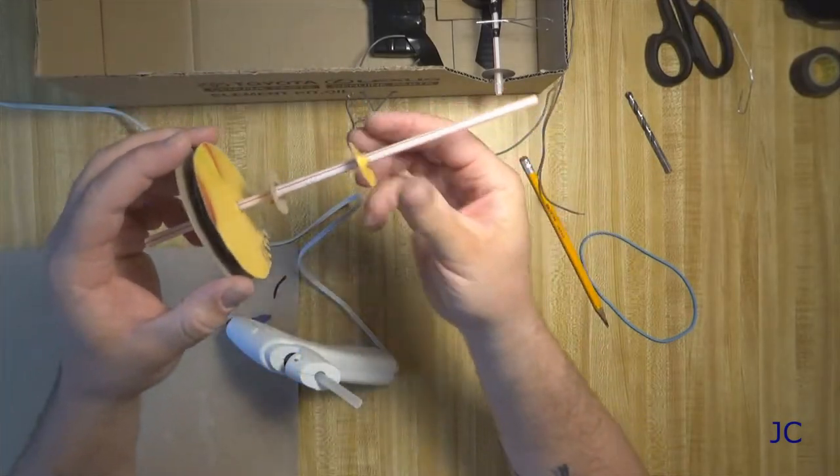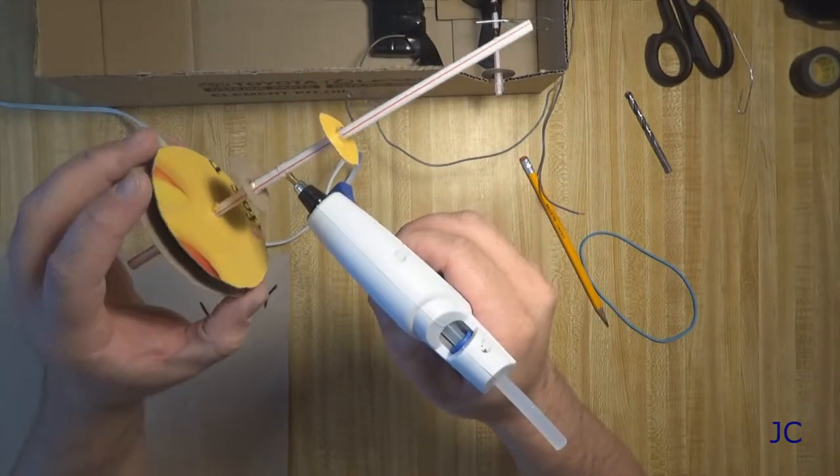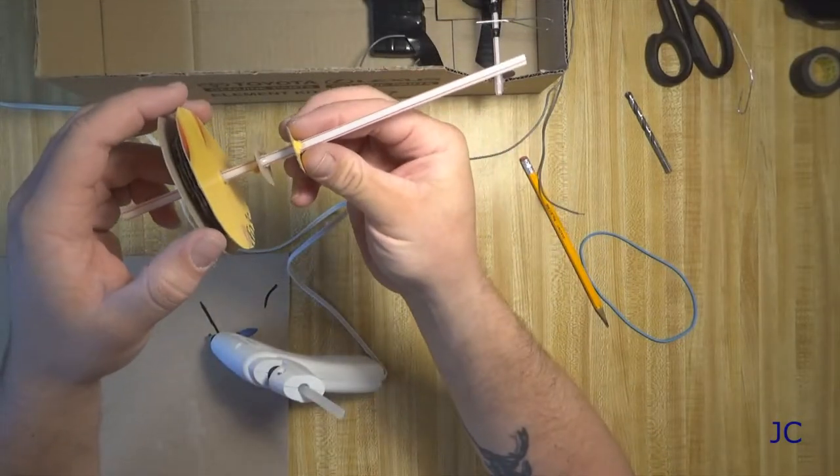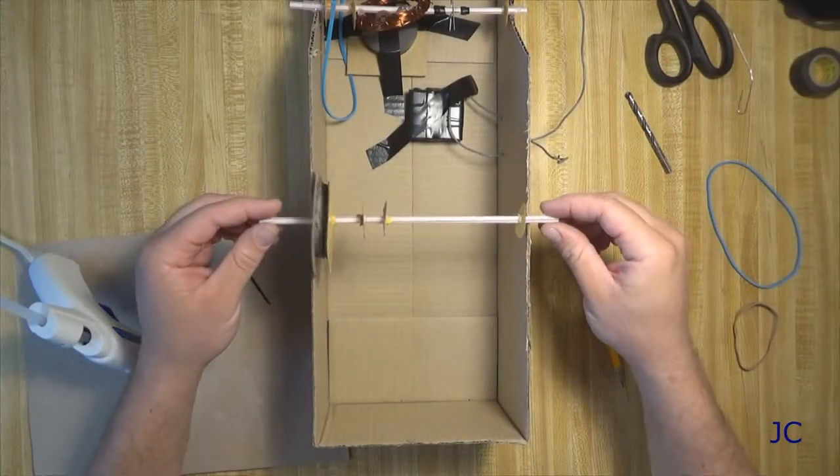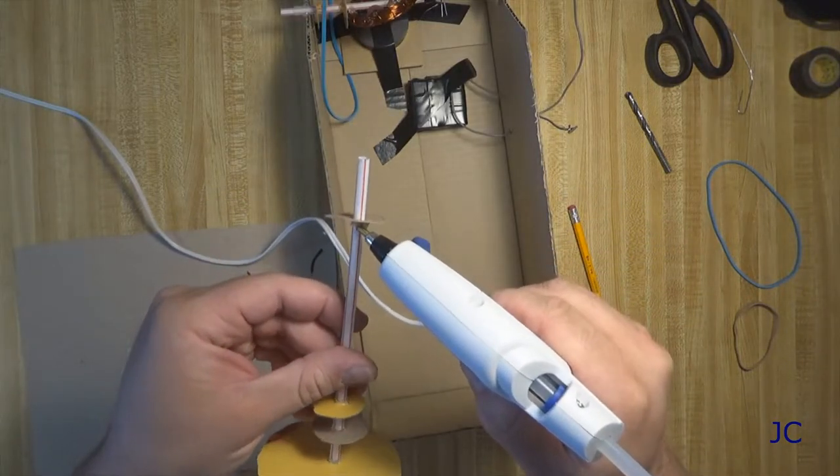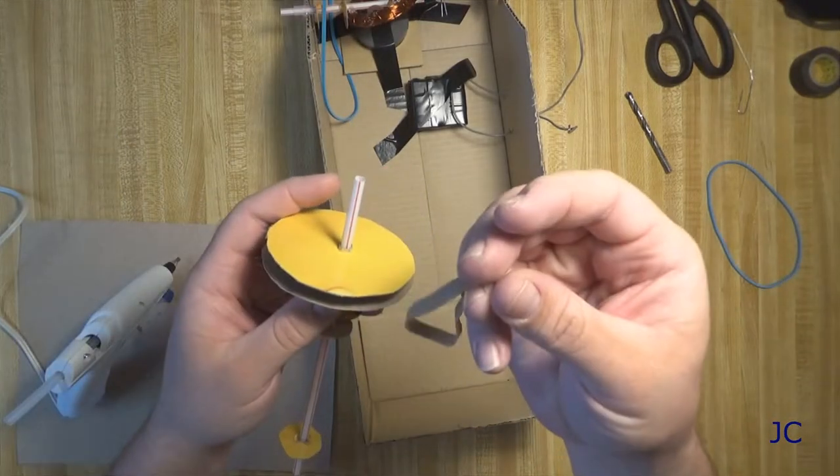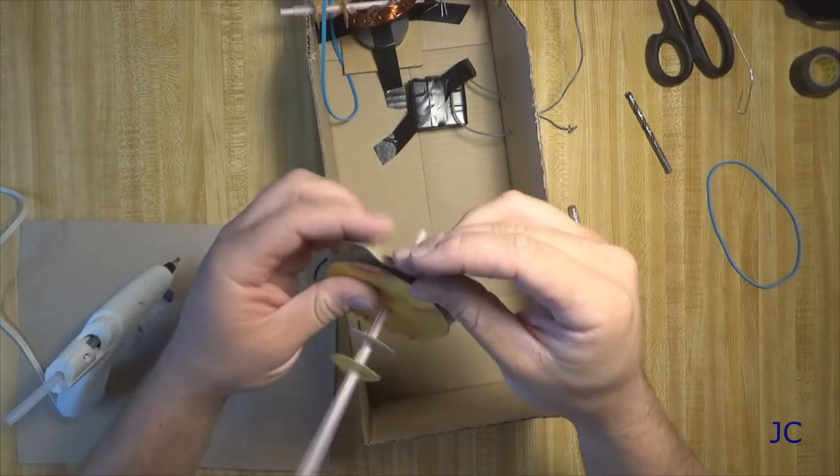We're going to make a couple of pulleys on this shaft. The one big one and then a smaller one, kind of like we did on the electric motor. Then we're going to take one more of the small pieces of cardboard and glue it on the shaft in a fashion to where it works as a thrust washer to keep this intermediate shaft from moving around too much.